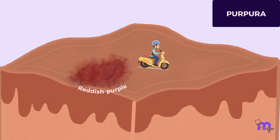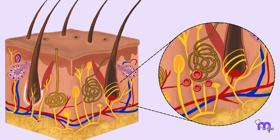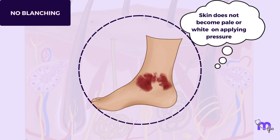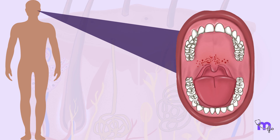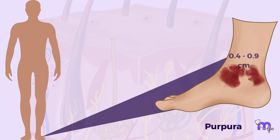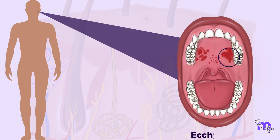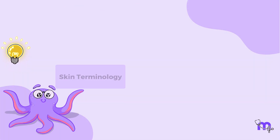This is a purpura. They are reddish-purple discolorations that appear on the skin or oral mucosa. They occur when blood leaks out from vessels into the connective tissue. Purpura does not blanch when pressure is applied. It is classified by size as: petechiae, which are less than 0.3 centimeters; purpura, between 0.4 to 0.9 centimeters; and ecchymosis, which is greater than 1 centimeter.